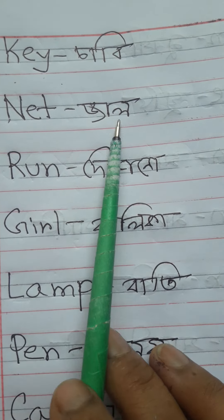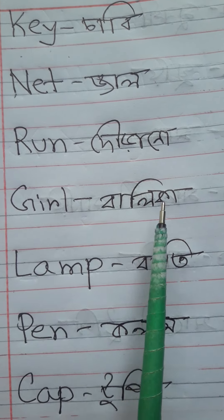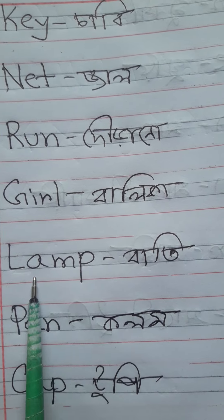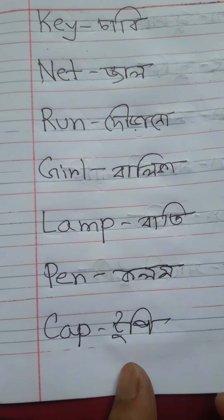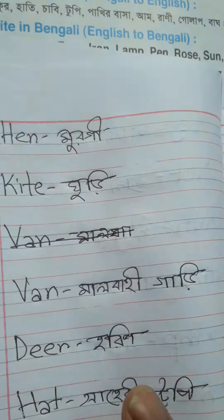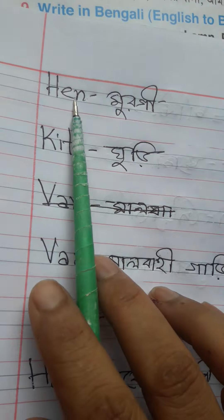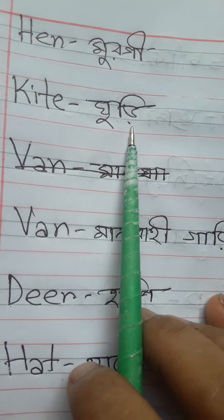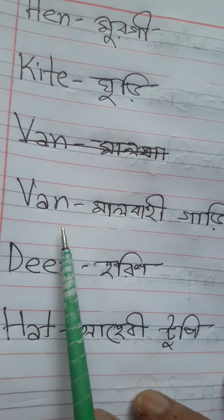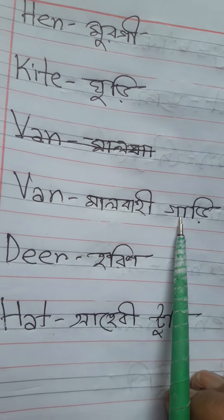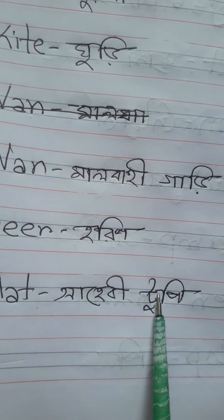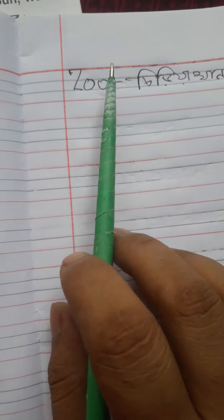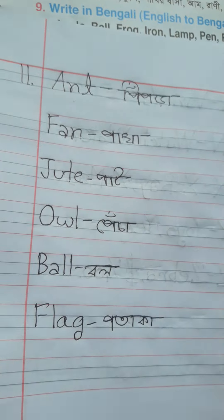Net অর্থ জাল। Run অর্থ দৌড়ান। Girl অর্থ বালিকা। Lamp অর্থ বাতি। Pen অর্থ কলম। Cap অর্থ টুপি। Hen অর্থ মুর্গী। Kite অর্থ ঘুড়ি। Van অর্থ মালবাহী গাড়ি। Deer অর্থ হরিণ। Hat অর্থ শায়বি টুপি। Zoo অর্থ চিড়িয়াখানা।